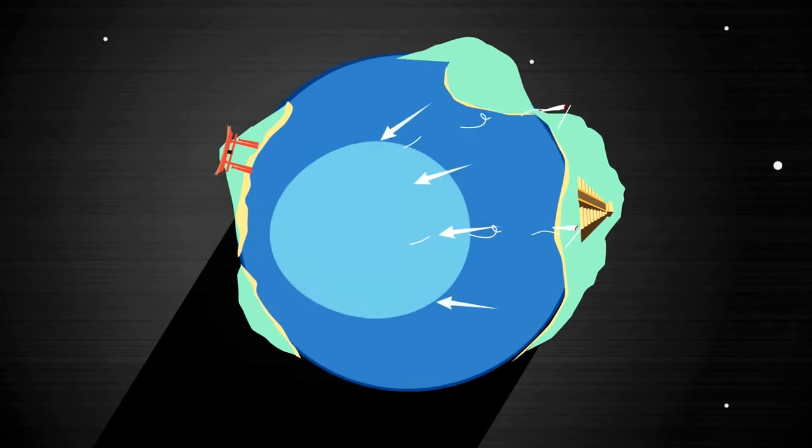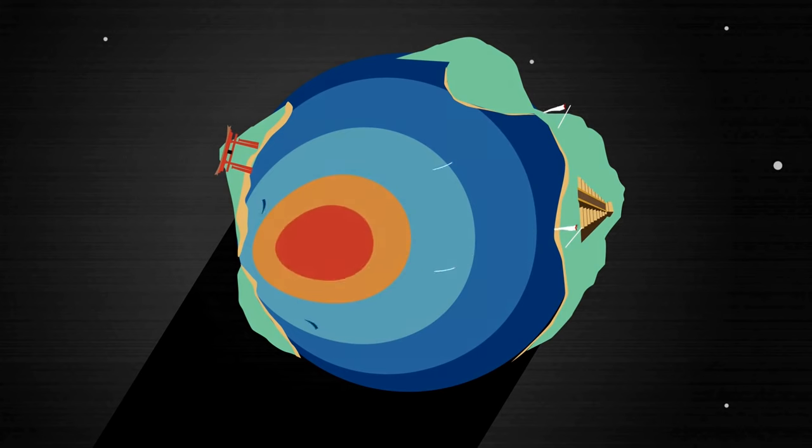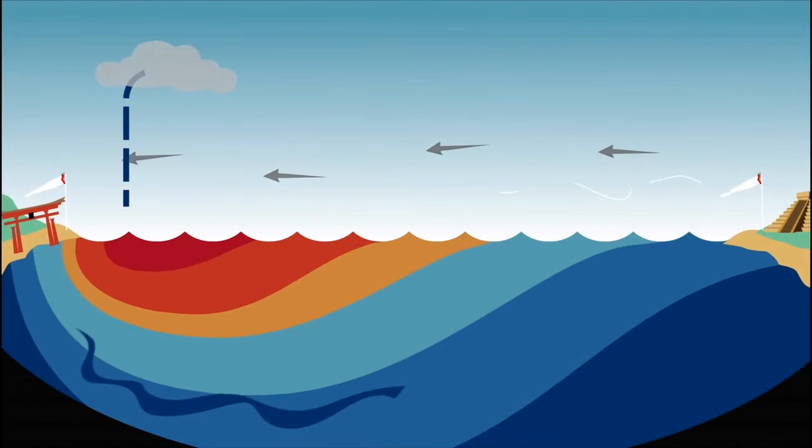Trade winds normally blow from east to west across this region, sweeping warm surface water away from South America, which allows cold water to well up in its place.